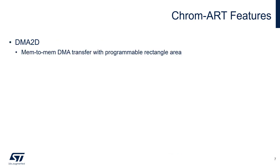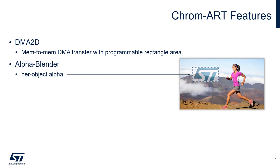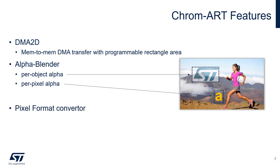The ChromArt features include a memory-to-memory DMA transfer with a programmable rectangle area, which allows per-object alpha blending as well as per-pixel alpha blending. This allows updating only part of the frame buffer with a logo, taking into account a global alpha or a per-pixel alpha in the case of glyphs. A glyph is the image representation of a character.